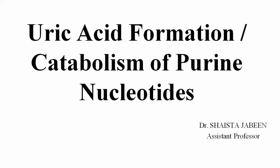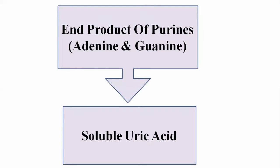This lecture is about uric acid formation by the catabolism of purine nucleotides. The purine nucleotide bases are adenine and guanine. Purines are taken up in food by the human body, passing through digestion. Polynucleotides in food are broken down by nucleotidase enzymes into mononucleotides, which are then absorbed into the blood circulation.